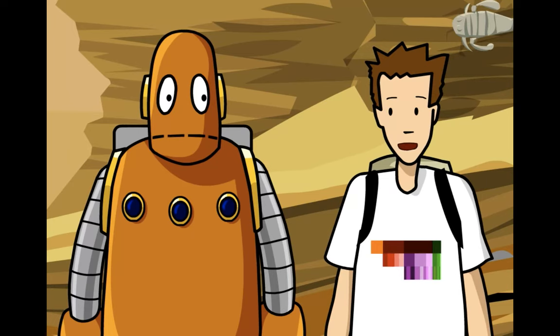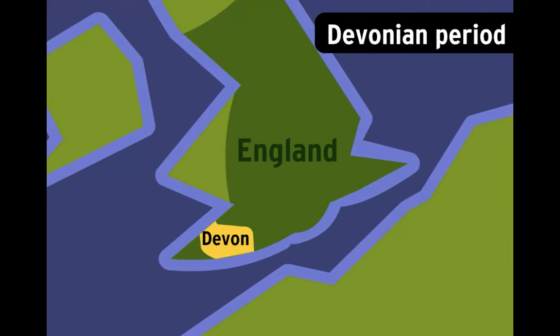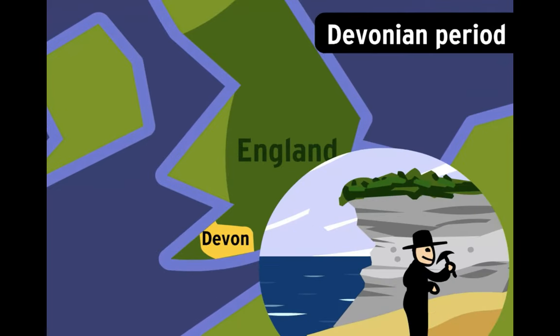Those names may sound confusing, but they usually have a pretty simple explanation. The Devonian period, for example, is named after Devon, England, where rock layers from that time were first studied.